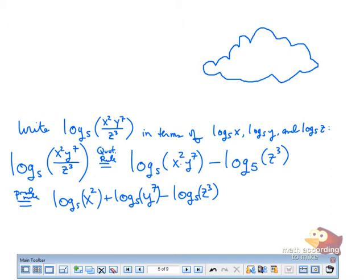And now notice all three arguments have exponents. So according to the power rule, where can we put exponents? So we'll have 2 log base 5 of x.